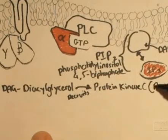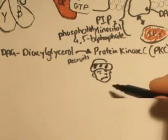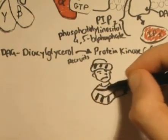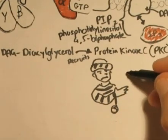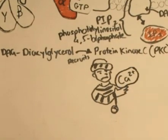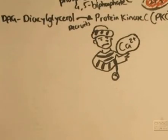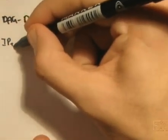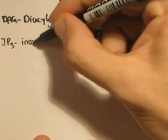PKC is an enzyme which plays an important role in cellular signaling. However, PKC recruitment and activation cannot happen without calcium ions. Luckily, IP3, the other messenger, helps with this problem.